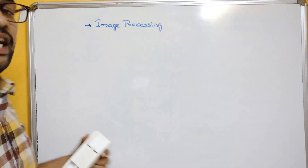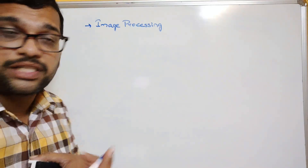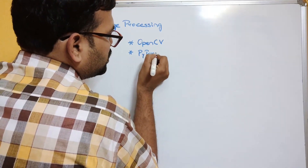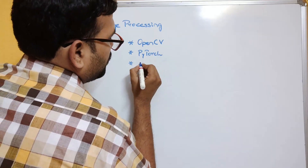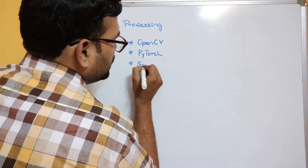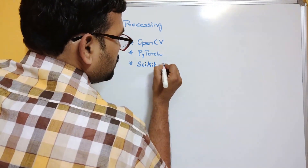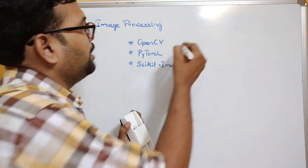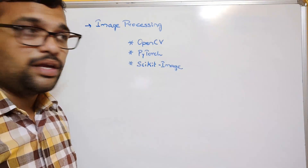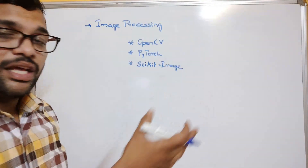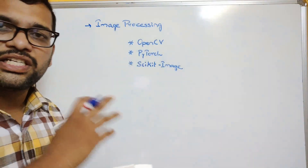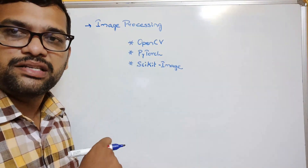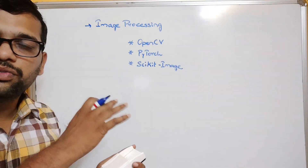For image processing — manipulating images, applying filters, processing images virtually — the major libraries are: OpenCV, PyTorch, and Pillow (Psychic Image). These are the most frequently used image processing libraries.